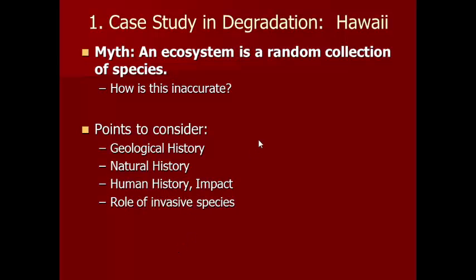There's a myth that an ecosystem is a random collection of species. What Wilson's discussion reveals is that an ecosystem typically grows up over time, established by long-term interactions of different species added very slowly — perhaps one every thousand years. That gives it a very different set of properties than just some random collection of things. Key points to consider with Hawaii include its geographical history, natural history, human history, and the role of invasive species.